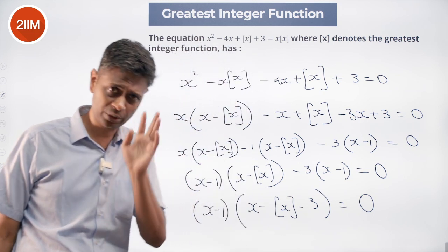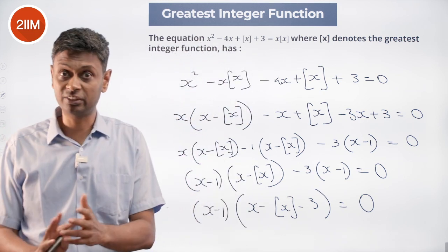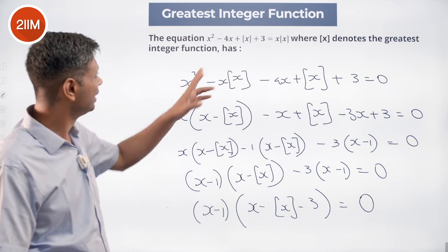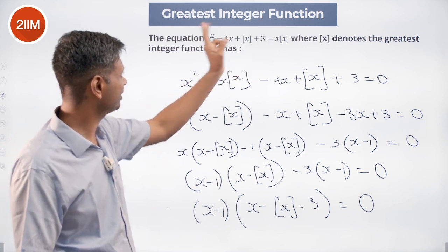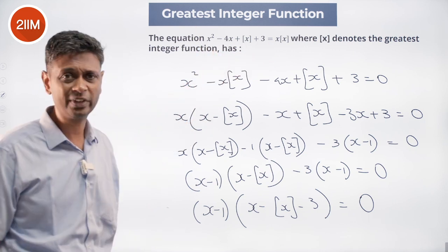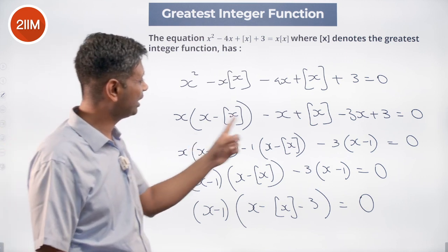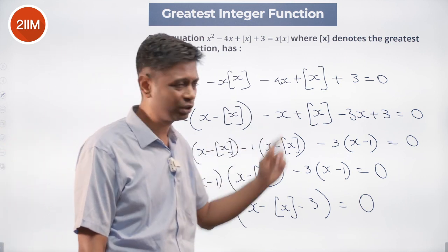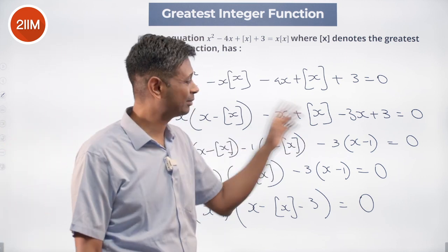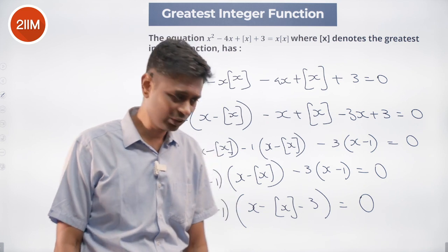Nicely factorized rather brilliantly. There is an x minus greatest integer of x term — we contrive another x minus greatest integer of x, put that in, and the remaining is minus 3x plus 3, which we stick at the end. And we're through.